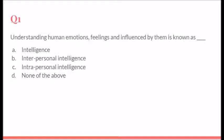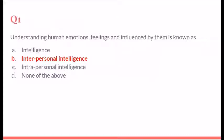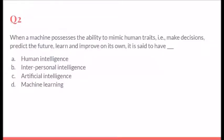As the word says, intelligence which is interpersonal intelligence. When a machine possesses the ability to mimic humans like decision making, predict the future, and learning and improving by its own, it is said to have artificial intelligence.